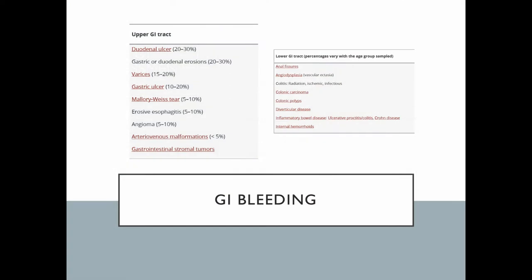GI bleeding is probably the most common and certainly the most exciting thing we see in critical care. In terms of what bleeds, remember there are upper GI bleeds and lower GI bleeds. The upper GI bleeds tend to produce bright red blood out of the mouth, and the lower GI bleeds tend to produce bright red blood out of the rectum. Upper GI bleeds that reach the bottom are dark and tarry because that blood has already been digested in the GI tract.